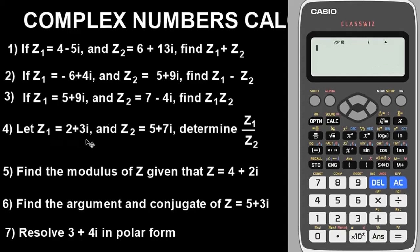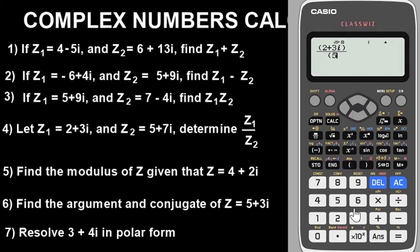Question four is division. Put z1 in brackets: 2 plus 3i, close the brackets, then the division sign, open brackets for z2: 5 plus 7i, close the brackets. Press Equals. The answer is 1 over 74 plus 1 over 74i. That is the answer for the division.